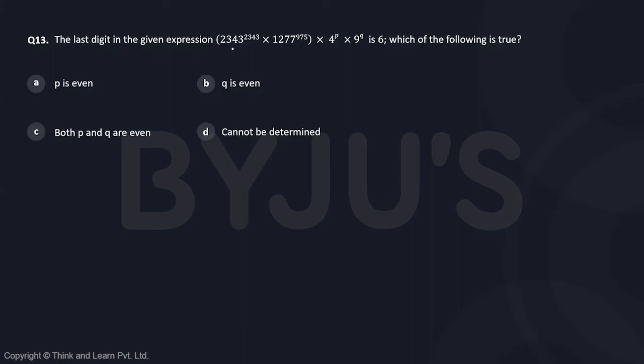The last digit in the given expression 2343 raised to 2343 times 277 raised to 975 times 4 to the power p times 9 to the power q is 6. Which of the following is true?